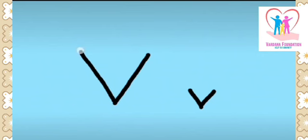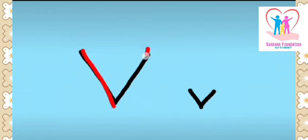Let's trace it one more time. One slant line from left to right bottom and one more slant line from right top to left bottom. And this would be capital script letter V.